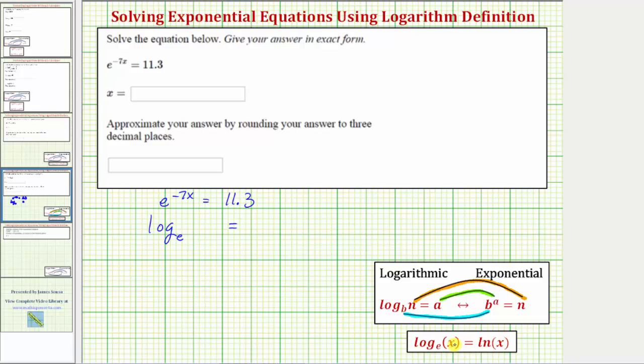A logarithm is an exponent. The exponent is negative seven x, so the logarithm is equal to negative seven x. And the exponential is equal to the number 11.3, and therefore we have log base e of 11.3 equals negative seven x.